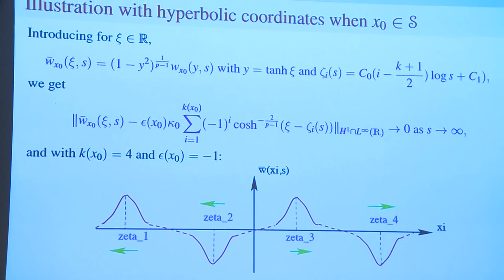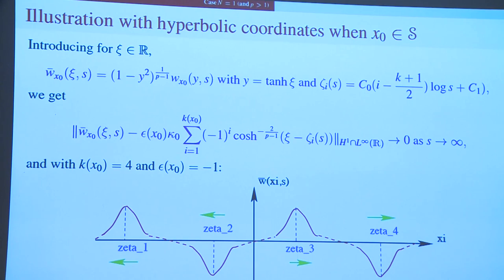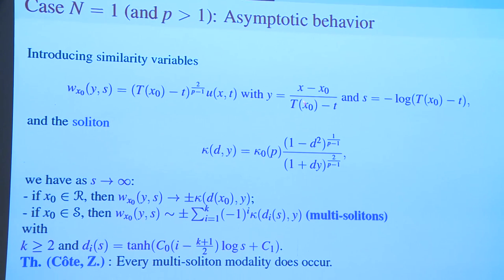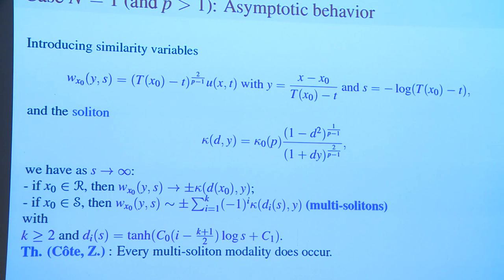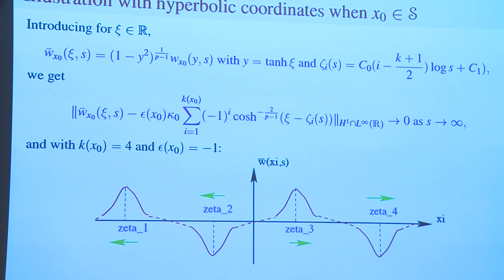Let me make a picture when k equals 4. If you have 4 solitons, it is nice to further change variables. Y equals hyperbolic tangent of xi, so xi is in R and y is in the unit ball. Multiplying W by the appropriate rate, you see KdV solitons. Your W-bar decomposes into a sum of alternating KdV solitons, and two neighbors have opposite signs. The two on the left go to the left, the two on the right go to the right. If you have an odd number of solitons, the middle soliton stays in the middle.